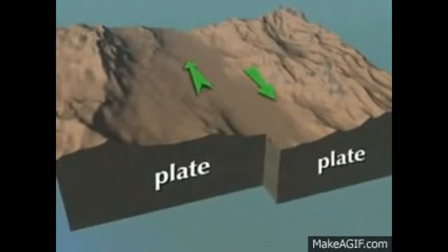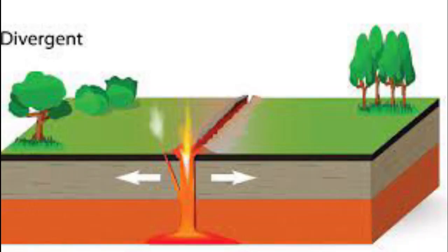The first type of plate boundary is termed divergent boundary, wherein plates move apart, creating a zone of tension.